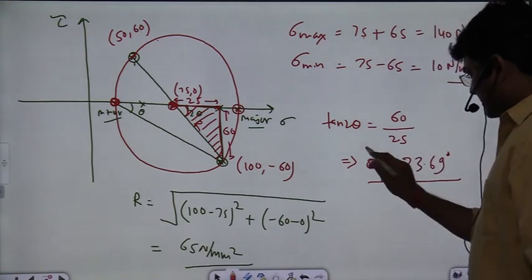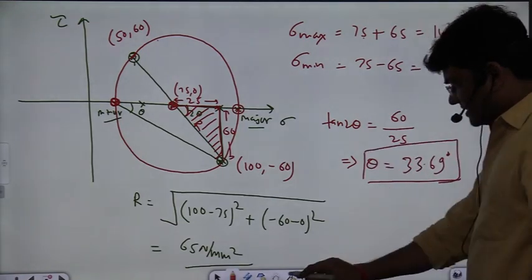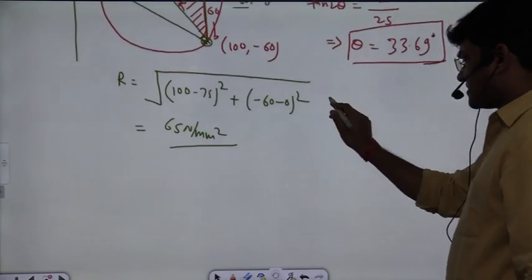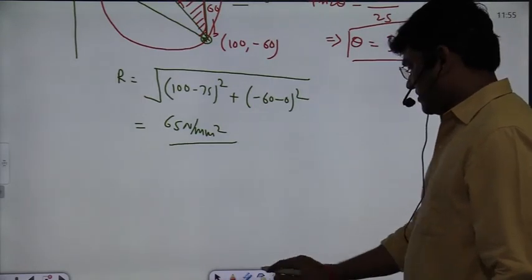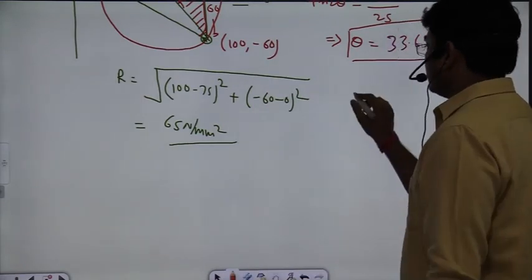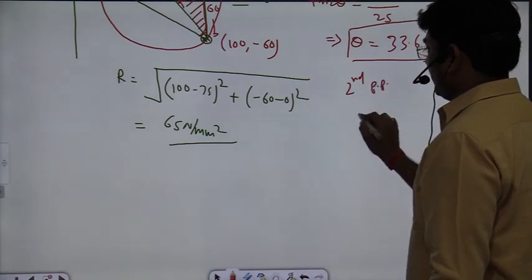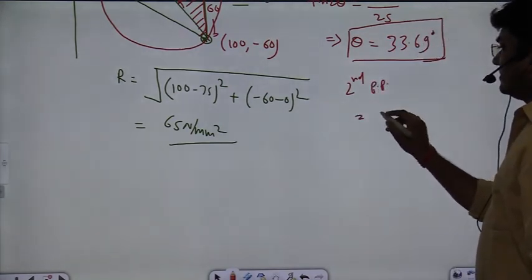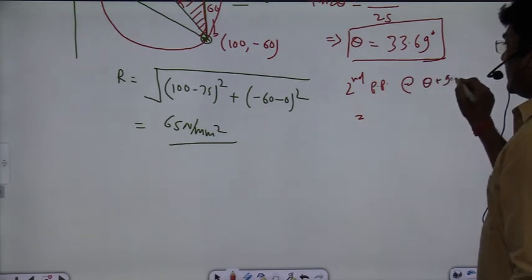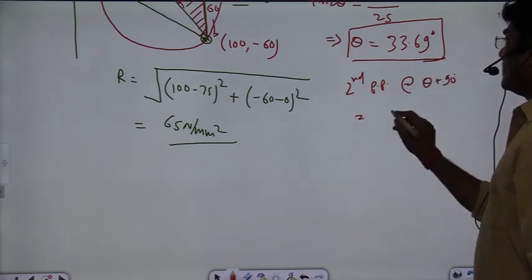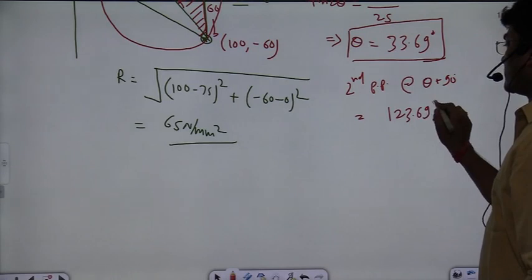So the major principal plane is at θ = 33.69°. The second principal plane will be at θ + 90°, which is 123.69 degrees.